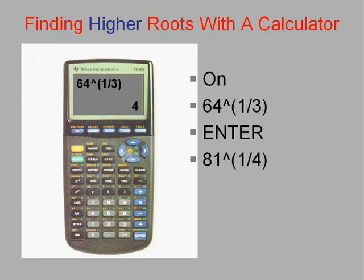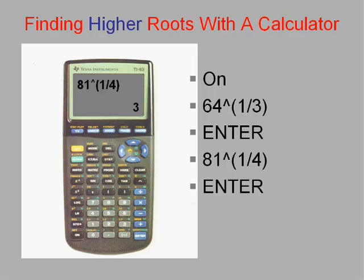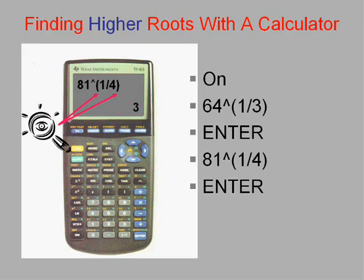81 to the one-fourth power — that would be the fourth root of 81, not the square root of 81 (which is 9), but the fourth root. If you hit enter, you get 3. Think about it: 3 times 3 times 3 times 3 is 81. Don't forget, you have to put those parentheses — that's the most common mistake in these kinds of problems.